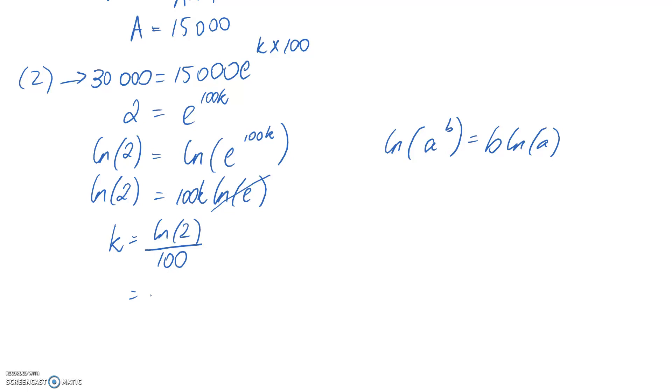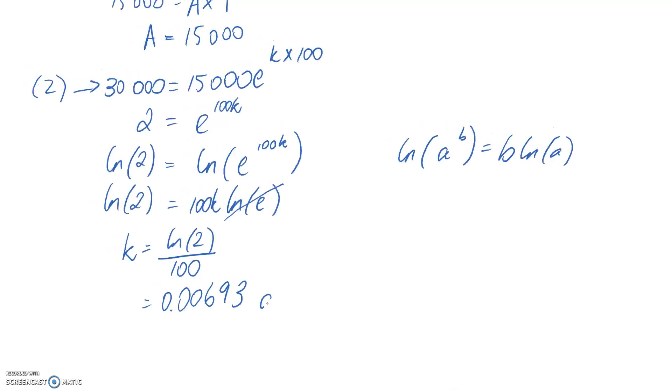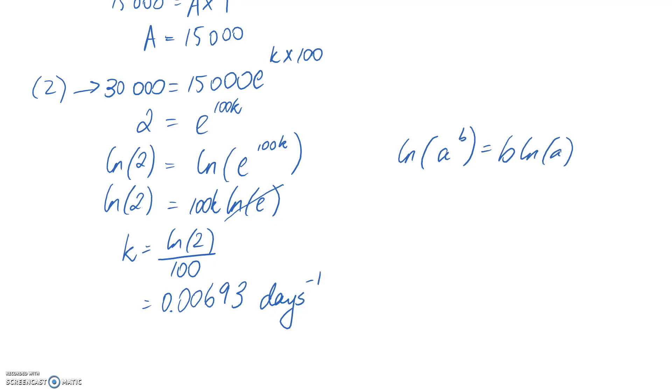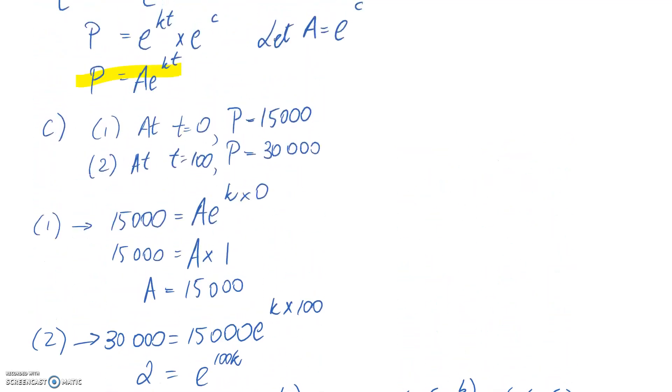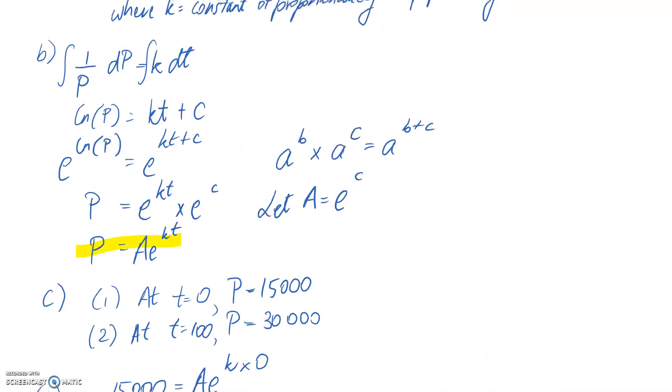Calculating this gives k = 0.00693. Since this is the constant of proportionality for the growth rate, it has units. It's the inverse of the time unit, which in this case is days^(-1), to keep the units balanced on both sides of the equation.